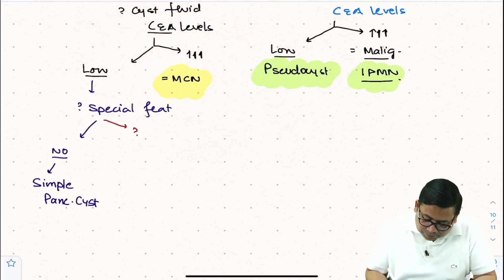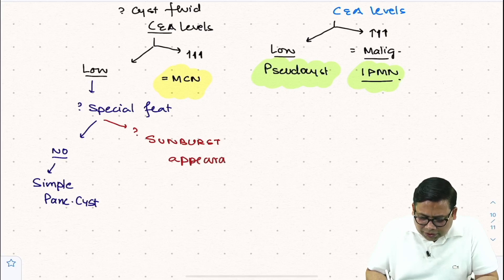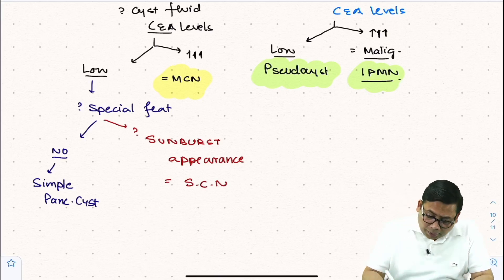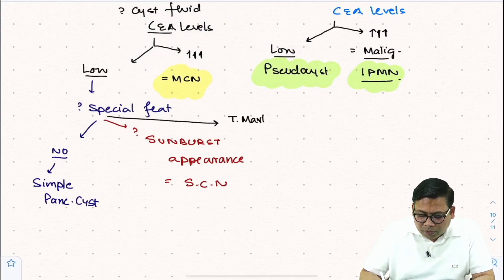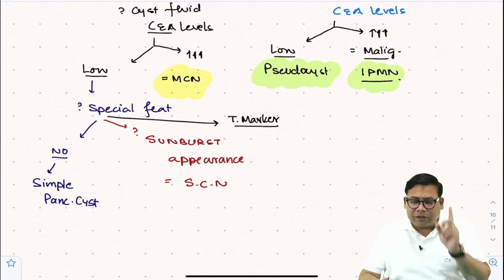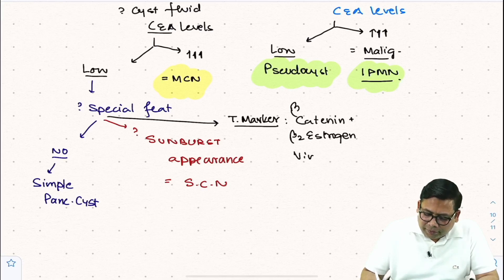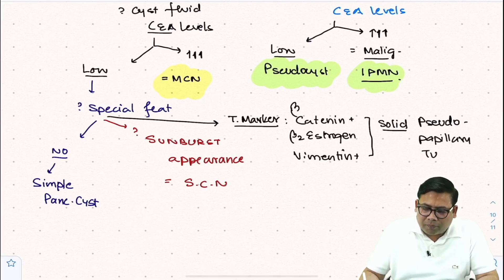However, when you look for special features and see a classical sunburst appearance on imaging, that is characteristic of serous cystic neoplasm. Another category involves specific tumor markers: when cyst fluid amylase and CEA are low but the sample is positive for beta-catenin, vimentin, and CD10 (estrogen receptor markers), this is diagnostic of solid pseudopapillary tumor.